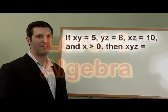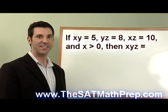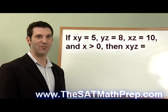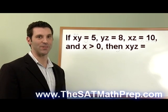If x times y equals 5, y times z equals 8, x times z equals 10, and x is greater than 0, then x times y times z equals what?